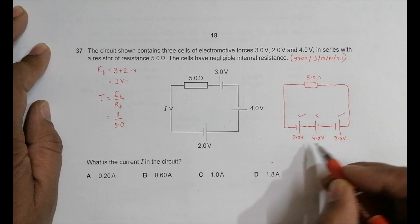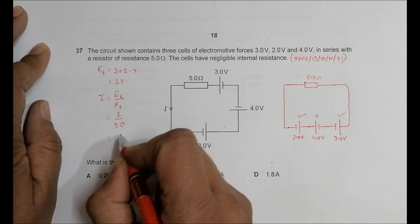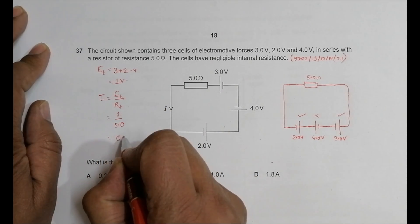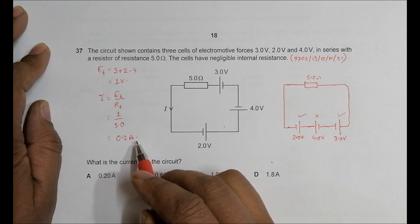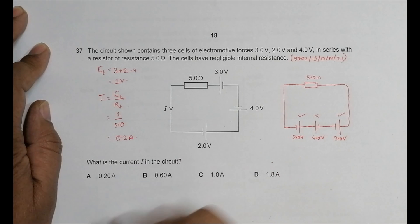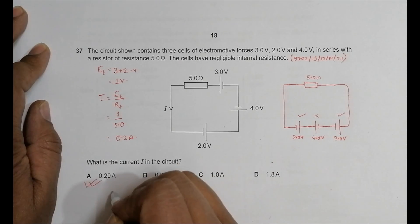So 1 divided by 5.0, this should be equal to 0.2 amperes. So the current here should be equal to 0.2 amperes, and it is choice A, which is the correct choice.